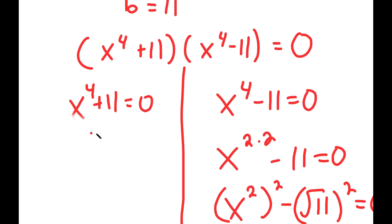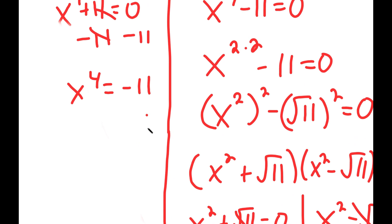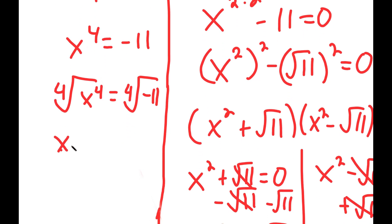Now going back to x to the power of 4 plus 11 equals 0: I subtract 11 on both sides and get x to the power of 4 equals negative 11. Now I can take the fourth root on both sides, so I get x is equal to the fourth root of negative 11, and this is positive or negative.